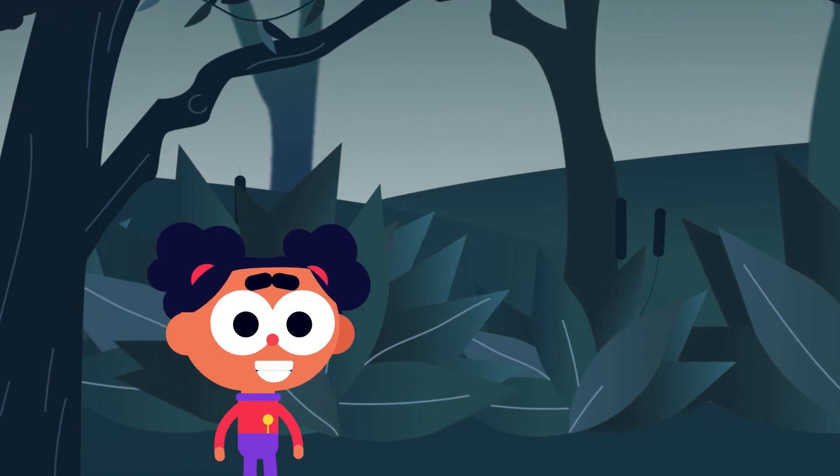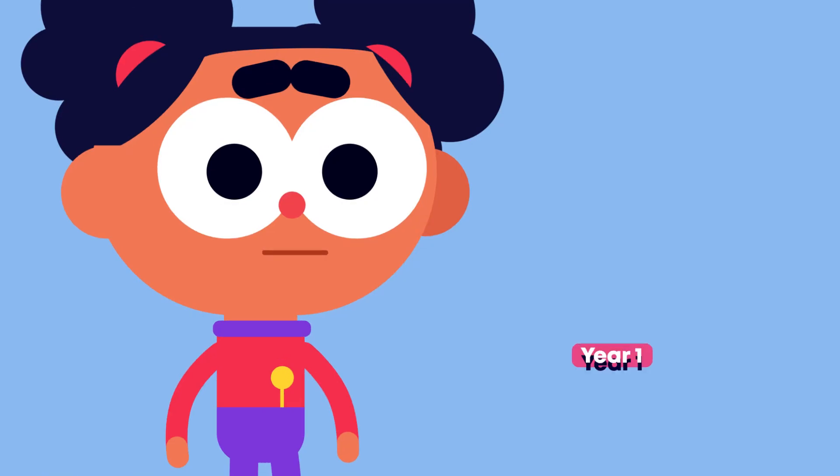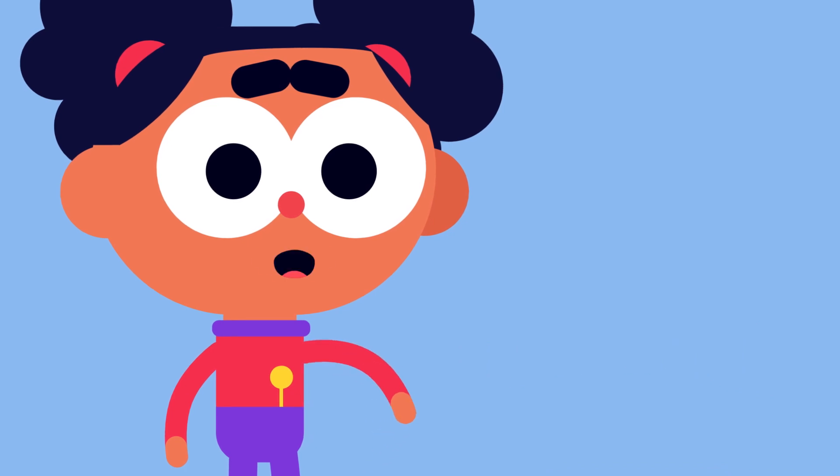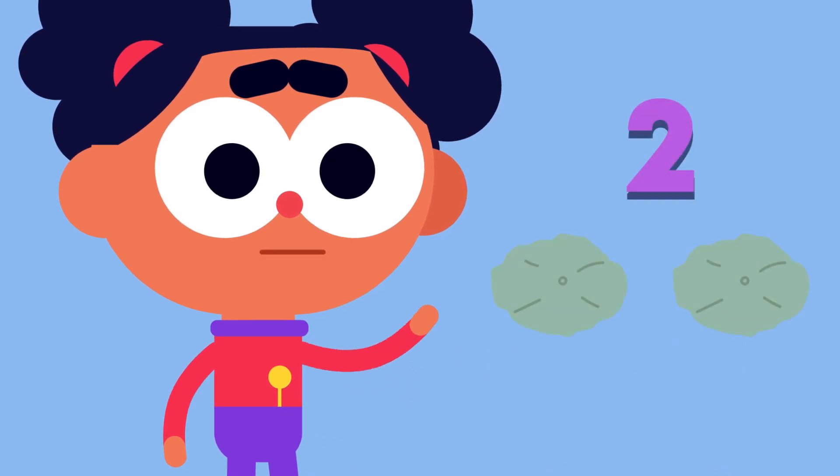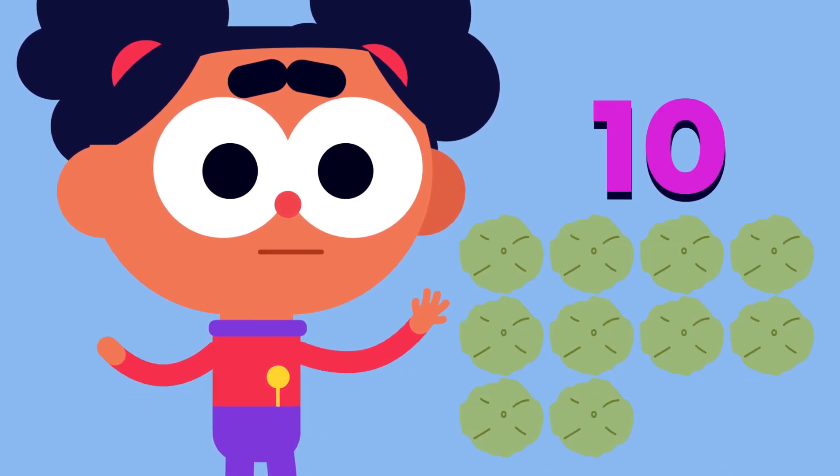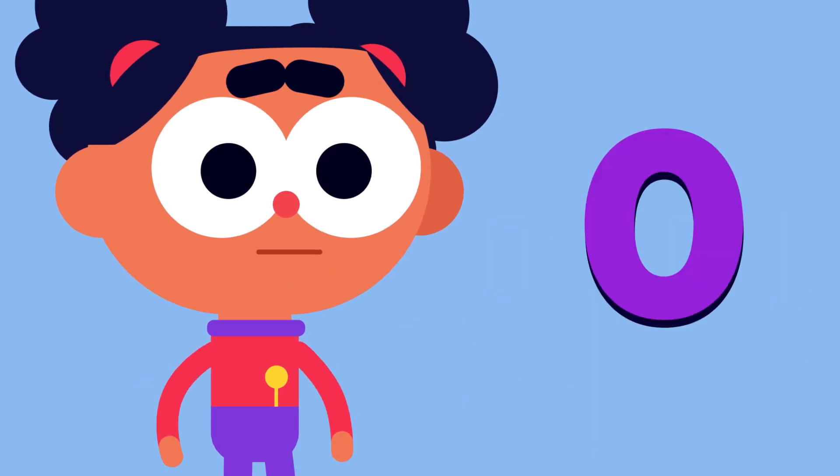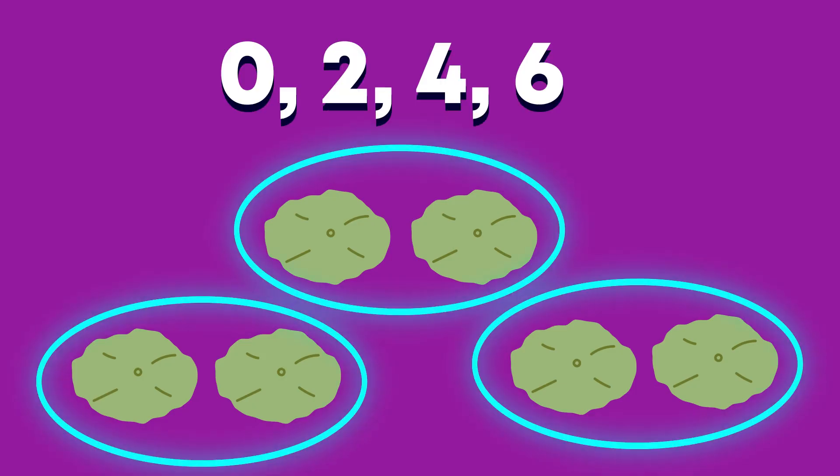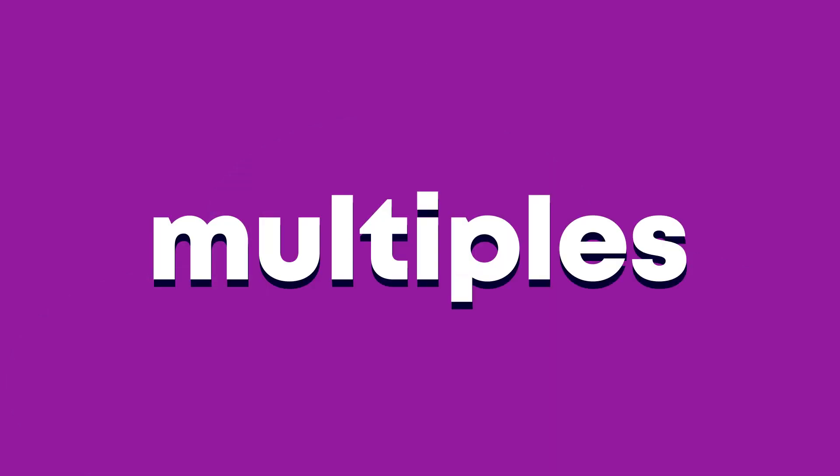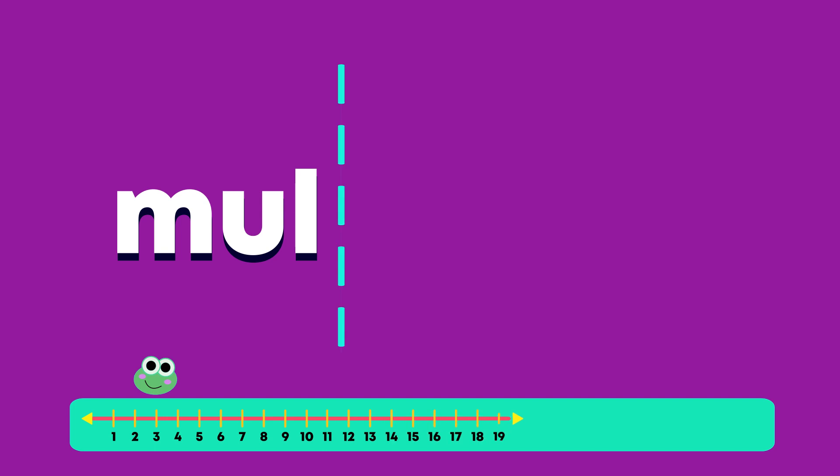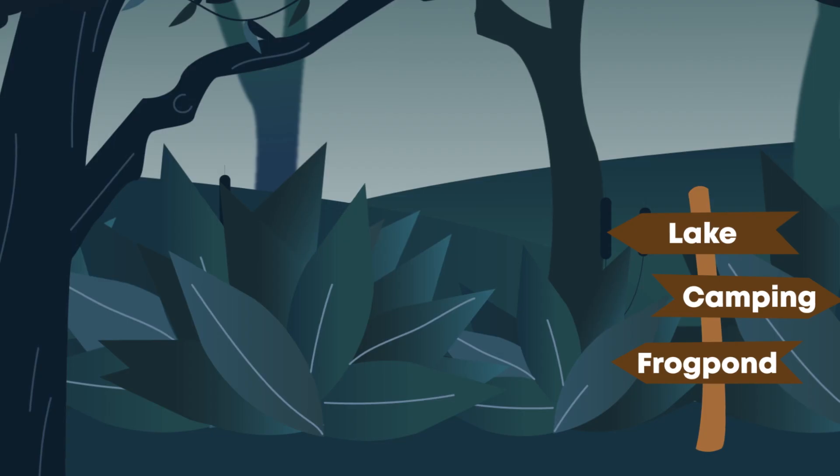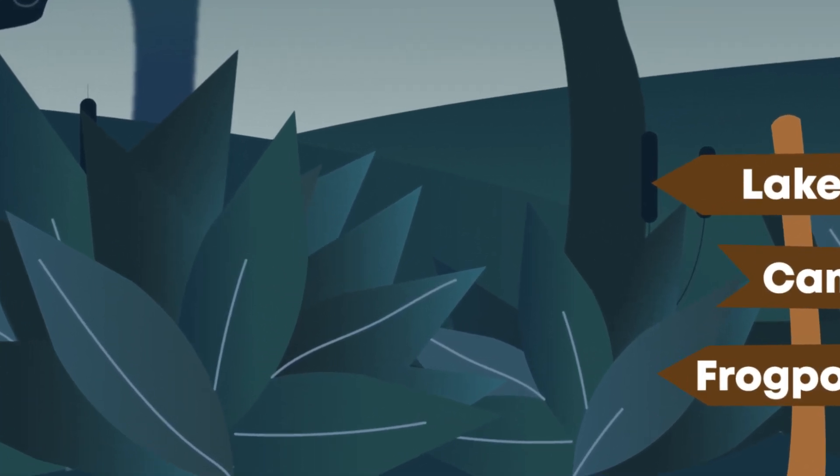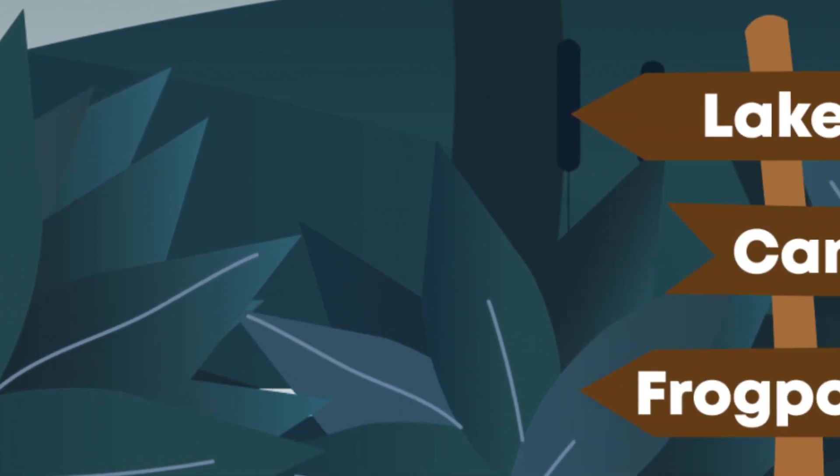Hello everyone, it's me Ava. Today we are going to have fun counting at the Falling Star Frog Pond. In year 1 we learnt how to count in 2s, 5s and 10s from 0. When we count in equal groups from 0, we call those groups multiples. Repeat after me. Multiples. Let's hop along to the Falling Star Frog Pond and start our counting fun.